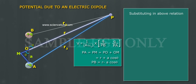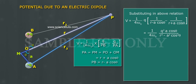Substituting in above relation, V is equal to 1 by 4 pi epsilon naught into Q of 1 by R minus A cos theta minus 1 by R plus A cos theta, is equal to 1 by 4 pi epsilon naught Q square A cos theta by R square.